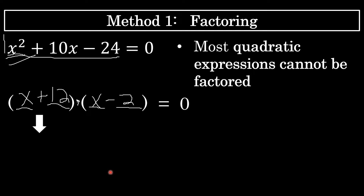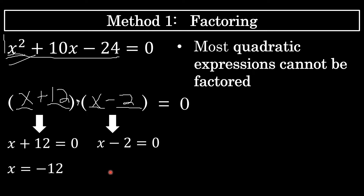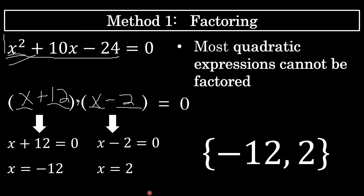Next, I will set each factor equal to 0. When I set x plus 12 equal to 0 and x minus 2 equal to 0, I find that x equals negative 12 and x equals positive 2. Those are the two solutions to the quadratic equation. X squared plus 10x minus 24 equals 0 has solutions of negative 12 and 2.